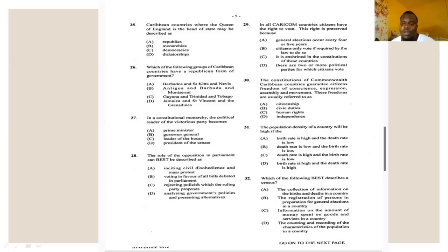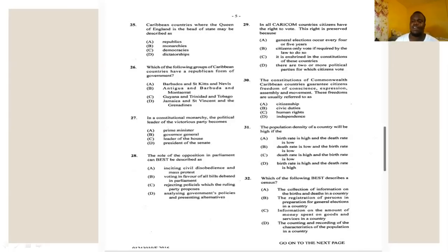Number thirty-two says: which of the following best describes a census? A: collection of information on births and deaths in a country, B: registration of persons in preparation for general elections, C: information on the amount of money spent on goods and services, or D: the counting and recording of the characteristics of a population in a country. The answer for number thirty-two is D. Thanks for watching — in the next video I will start from number 33 right up to 60.